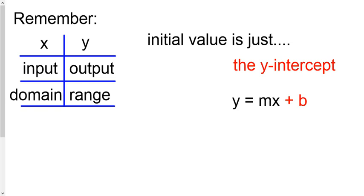So when you look at the slope-intercept form of the equation, that's what we're looking at right here. Initial value is just another name for that y-intercept.